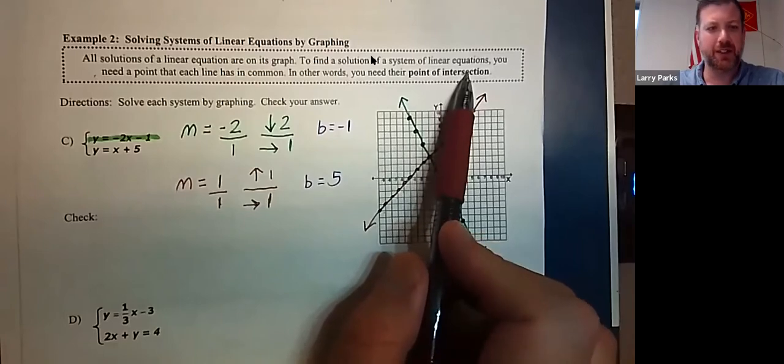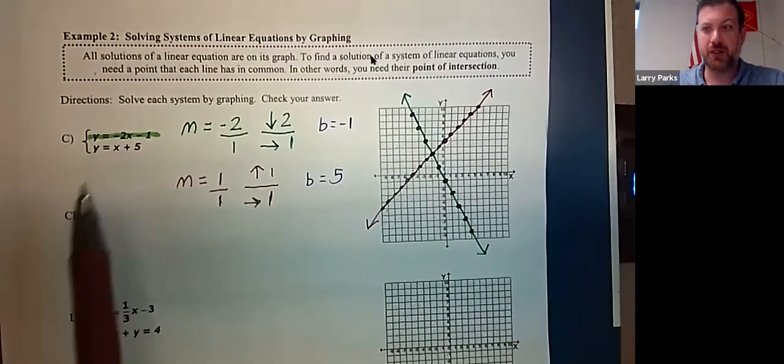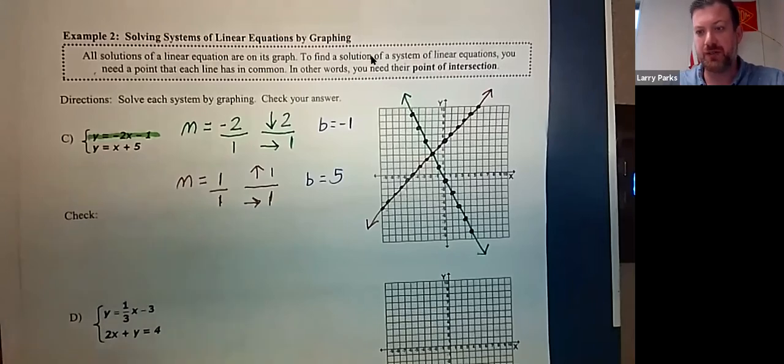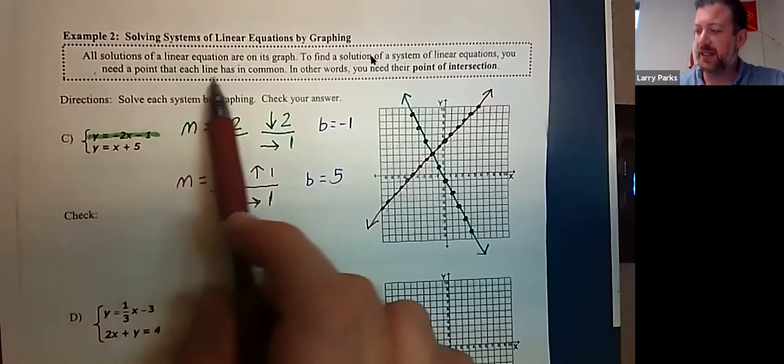Define a solution of what we call a system. Now, why do we call it a system? It's when you have more than one equation. So we could have three equations, four equations, five. Since this is high school math, we'll probably only do two. I know later next week we'll do three. But two or three at the most.